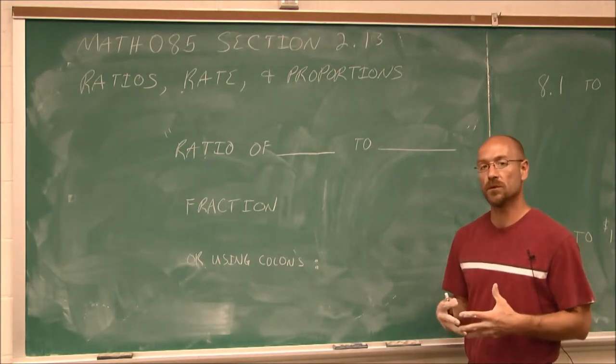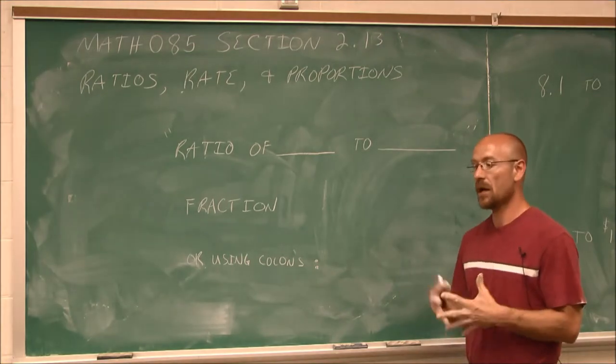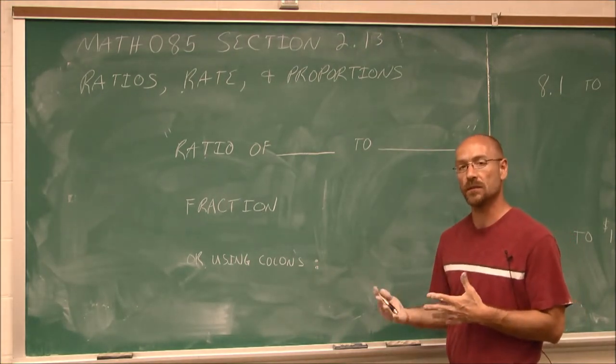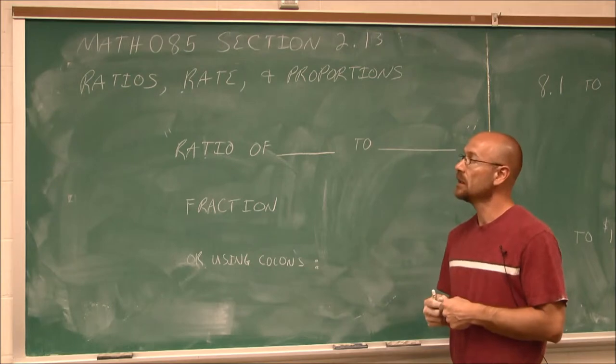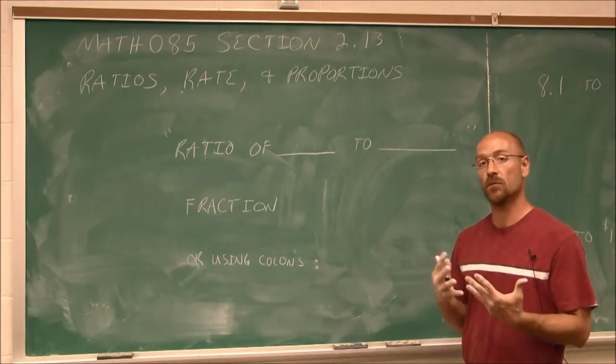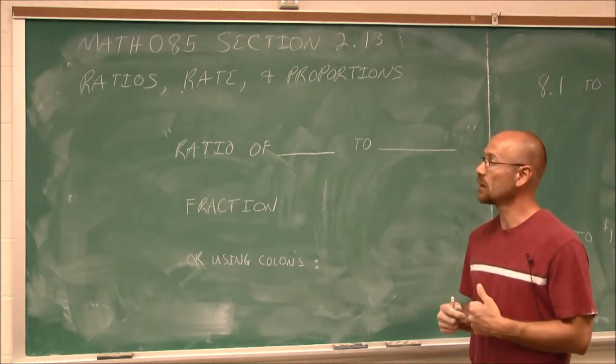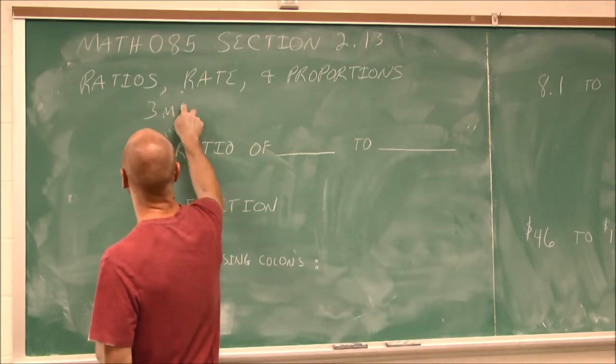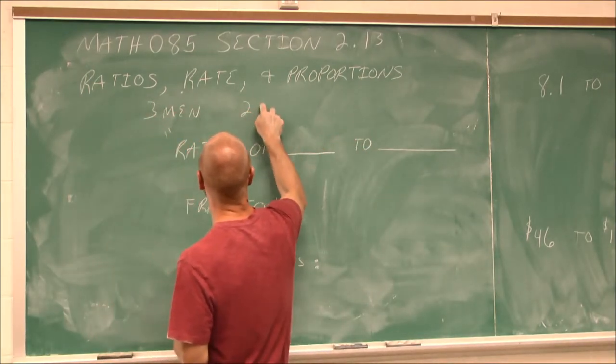The first example I'm going to use is my own household. In my home, there's myself, my two sons, my wife, and my daughter. If we're looking at a ratio of men to women in my home, there would be three men to two women.